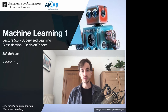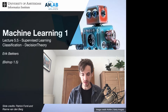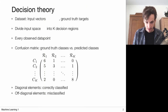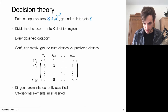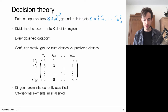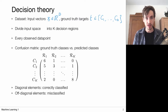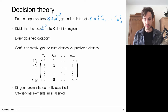Before we fully move on to classifiers, let's take a moment to go over the theory of making decisions and think about when we consider a classifier to be a good classifier. The setting is we have input vectors which come from some d-dimensional vector space, and we have corresponding ground-truth targets, which I'm going to denote with t. My target belongs to one out of k classes. With the classifier, I'm going to divide the input space into k decision regions.